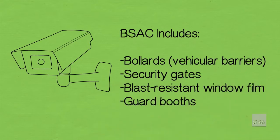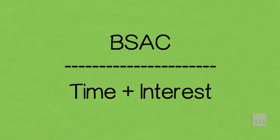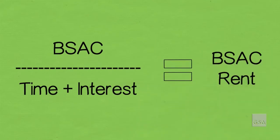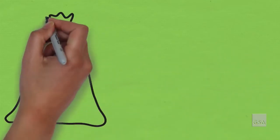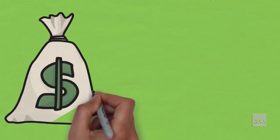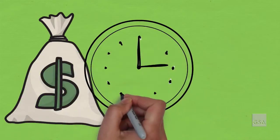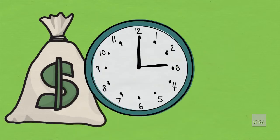These specific physical security measures are a separate capital investment to be amortized over a period of time, and thus are broken out separately from other rent components. The amortized BSAC over a period of time, including interest, equals the BSAC rent. Similar to tenant improvements, BSAC dollars are provided up front by the lessor. These costs are then amortized into the rent and paid over a period of time using an interest rate defined by the offerer.